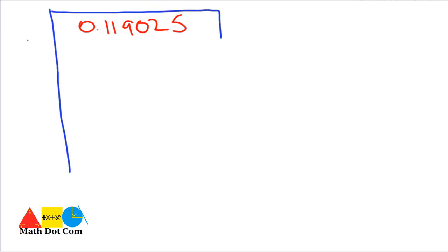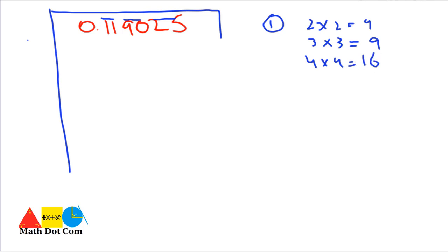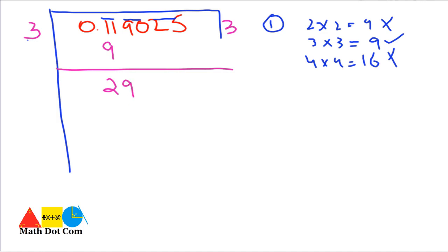Using the same method, we make pairs. From right to left: '0', '11', '90', '25' — we do not consider the leading zero separately. In step 1, we need a number whose square is less than 11. We check: 2×2=4, 3×3=9, 4×4=16. So we select 3, since 3×3=9 ≤ 11. We write 3 as quotient: 11−9 = 2. In step 2, double the quotient: 3+3=6. Write 6 with a blank space.